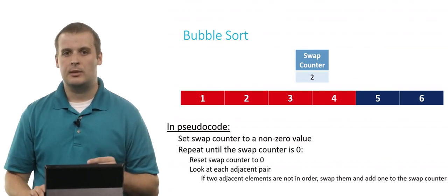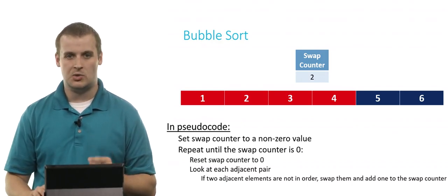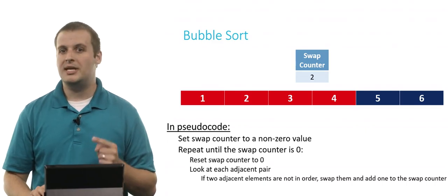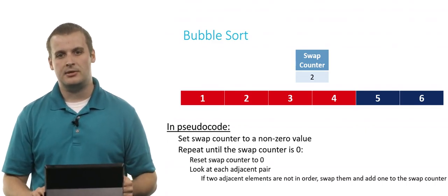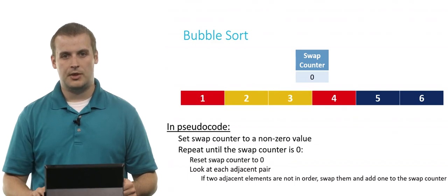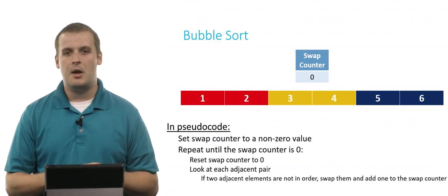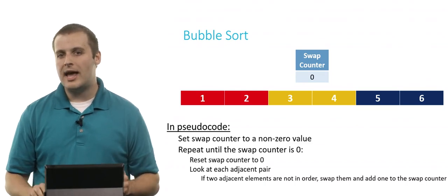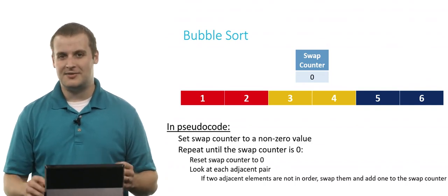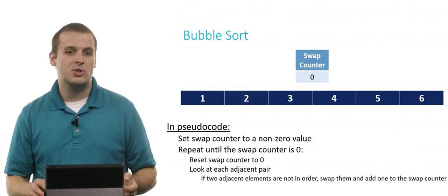You're looking at the screen and can probably tell that the array is sorted right now, but we can't prove that yet — we don't have a guarantee. This is where the swap counter comes into play. The swap counter is two, so we repeat again. We reset the swap counter to zero and look at each adjacent pair: one and two are in order, two and three are in order, three and four are in order. We've completed looking at every adjacent pair, but the swap counter is still zero. If we don't have to switch any elements, then they must be in order, and we can declare the entire array is sorted.